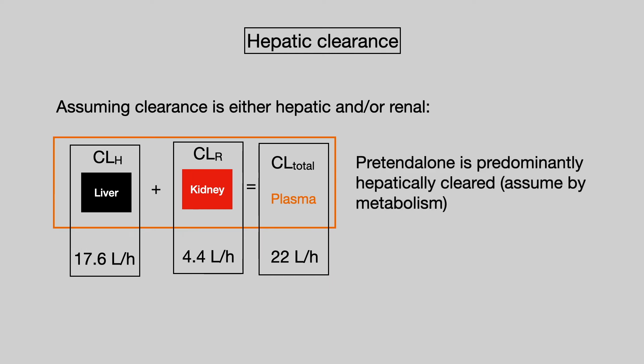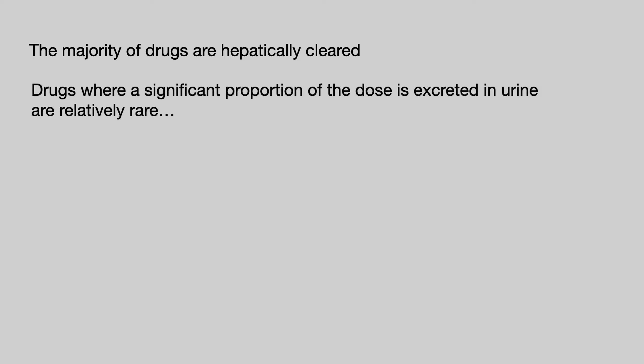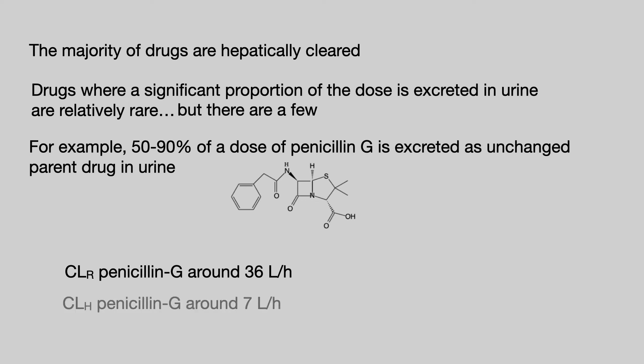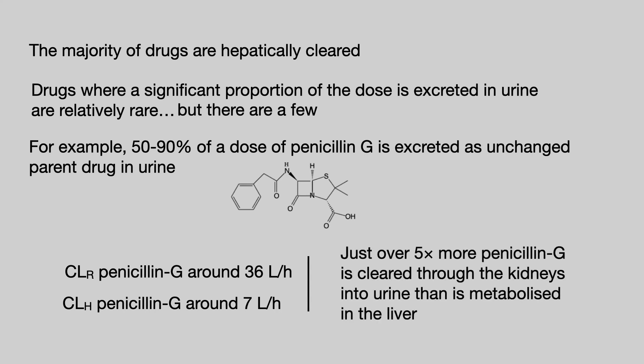This tells us that Pretend Alone is predominantly hepatically cleared — probably by metabolism. In fact, the majority of drugs are hepatically cleared. Drugs where a significant portion of the dose ends up in the urine are relatively rare, but there are some important examples. Looking at penicillin G, the renal clearance is around 36 litres per hour and the hepatic clearance is around 7 litres per hour, so penicillin G is cleared about 5 times more through the kidneys than the liver.